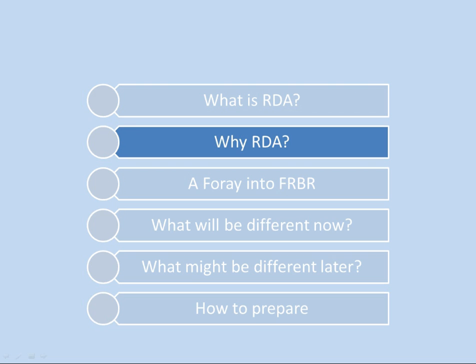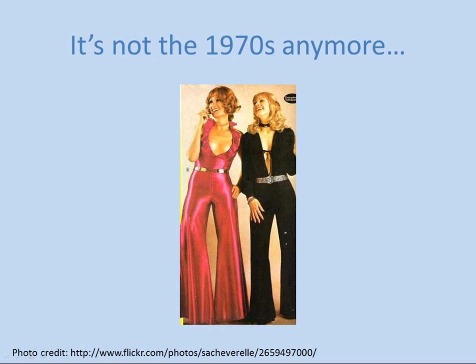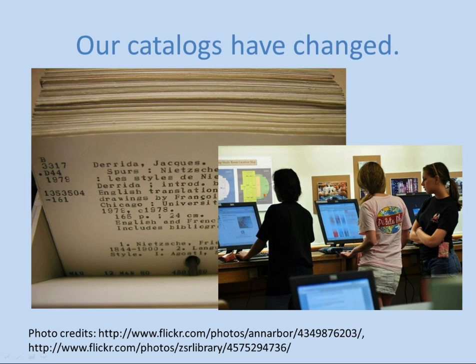Why was this change necessary? In short, because it's not the 1970s anymore. AACR2 was written in the late 1970s and started to be implemented in 1980. A lot of things have changed since then — the catalogs have changed, we don't use cards anymore. Many things included in AACR2 are still based on card catalogs. We abbreviate things because we had limited space on little cards. The whole concept of a main entry, for example, really relies on a card catalog environment. RDA was established to get away from that and recognize we are working with online computerized catalogs.